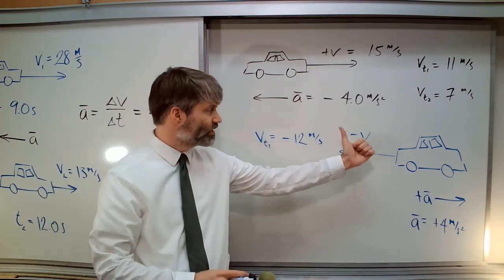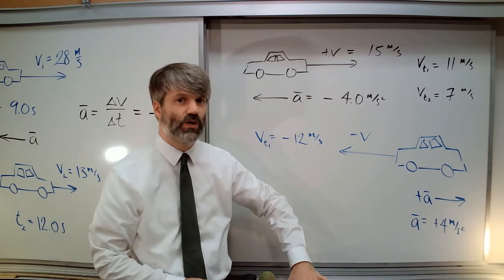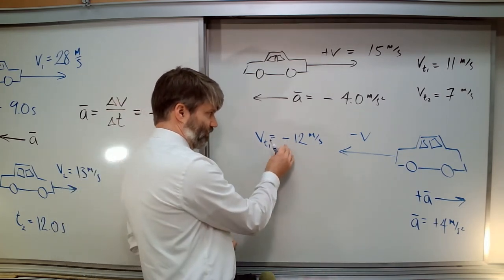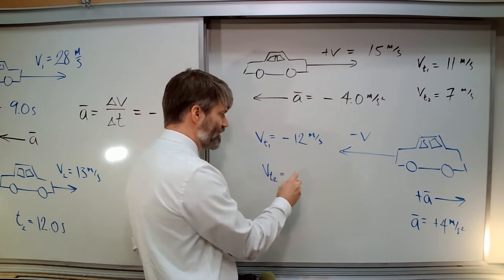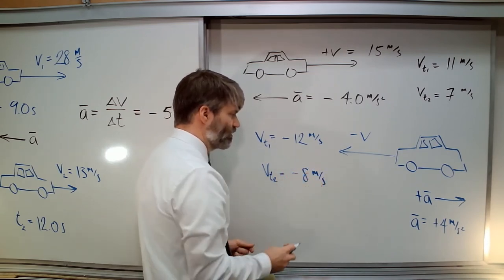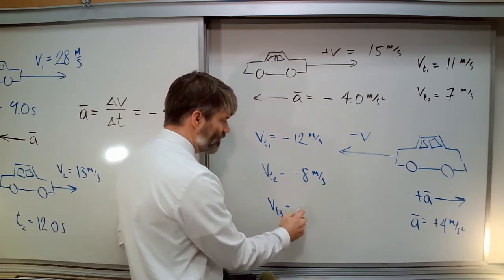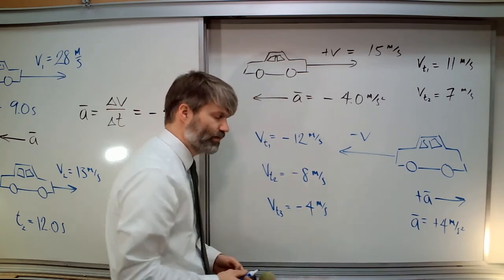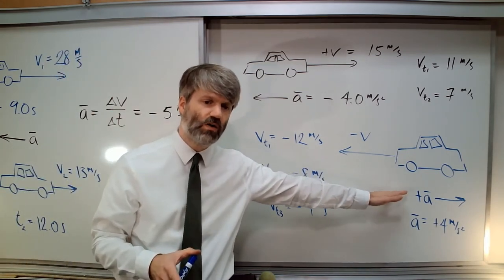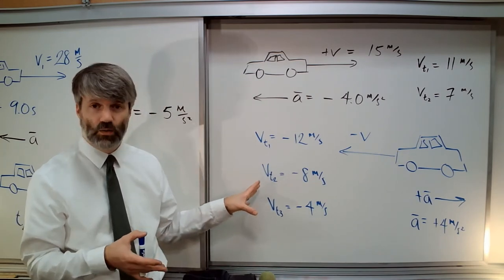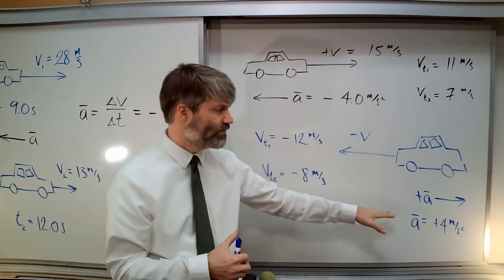If the object is moving in the negative direction at 12 meters per second and has an acceleration of 4 meters per second squared, then one second later we're adding 4 meters per second of velocity. Its new velocity, one second later, is going to be negative 8 meters per second. And another second after that, we've got negative 4 meters per second. So we can see: we've got a positive acceleration, but the car is slowing down — in terms of speed — and will eventually come to a stop, even though it has a positive acceleration.